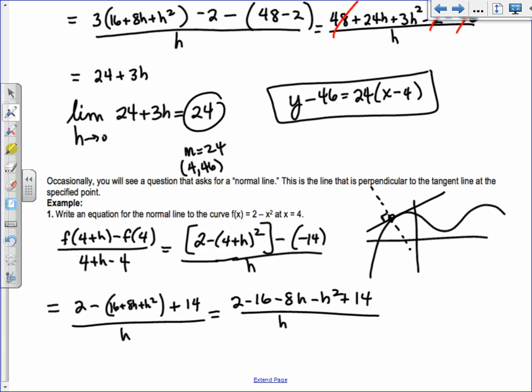I have 2 - 16 - 8h - h² + 14 all over h. The constants should always go away: 2 - 16 is -14, plus 14. When you take h into both pieces, you get -8 - h. Taking the limit as h goes to 0, I get -8 - h ends up being -8. That's your slope, m = -8. My point, if you plug in 4, we got -14. That's for your tangent line.